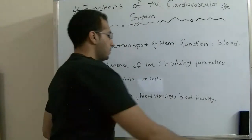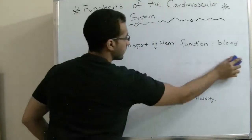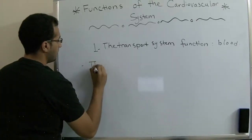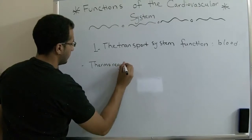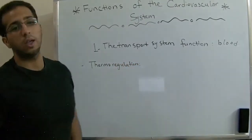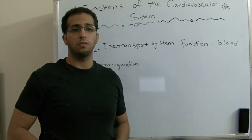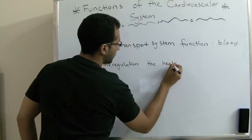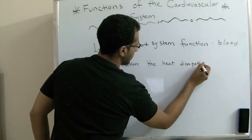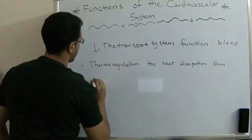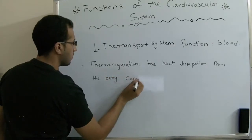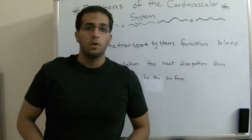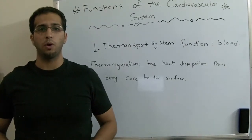For the last mechanism we're going to discuss today, it's thermoregulation. The thermoregulation mechanism has the function of dissipating heat from the body core to the surface. So these were the main functions of the blood transport system.